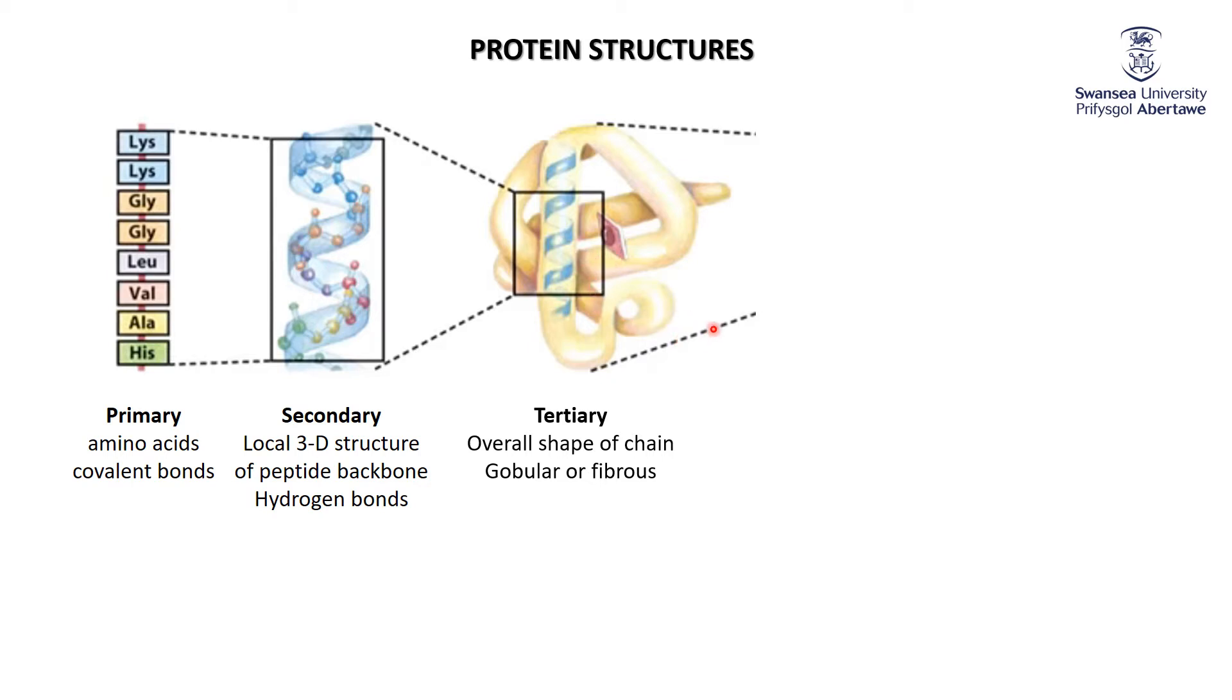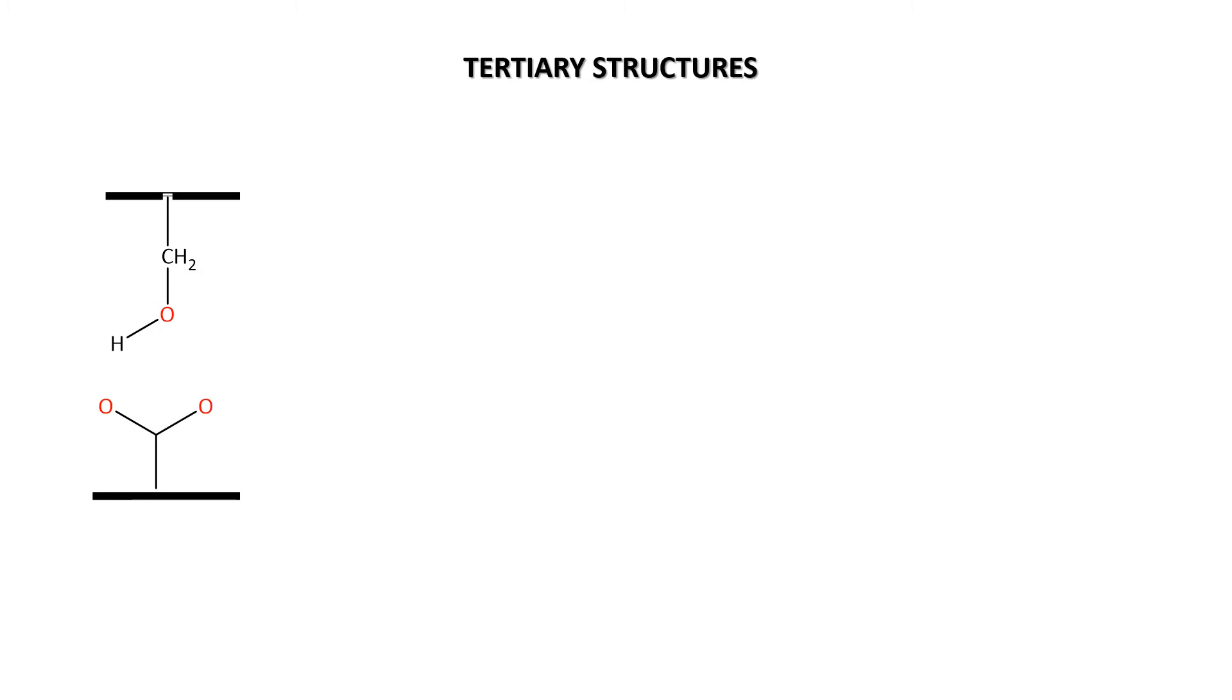Fibrous ones are arranged themselves sort of in a lengthwise fashion. Now the interactions that hold the tertiary structure together are all different types of intermolecular forces. We think of here's one part of the protein, there's another big part of the protein.